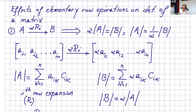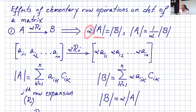In this video we're going to talk about the effects of elementary row operations on the determinant of a matrix. Remember we had three legal row operations. The first one is multiplying a row by a constant. When you do that, alpha times the determinant of A equals the determinant of B, so the determinant of A equals one over alpha times the determinant of B.